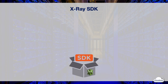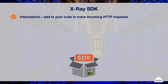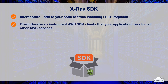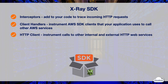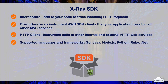The X-Ray SDK provides three main components you can use in your application to communicate with the X-Ray API. Interceptors are added to your code to trace incoming HTTP requests. Client handlers help instrument AWS SDK clients that your application uses to call other AWS services. An HTTP client is used to instrument calls to other internal and external HTTP web services.